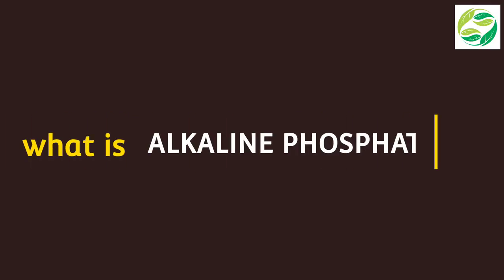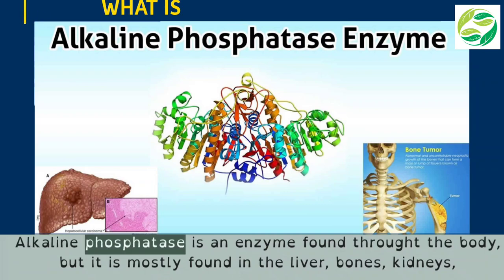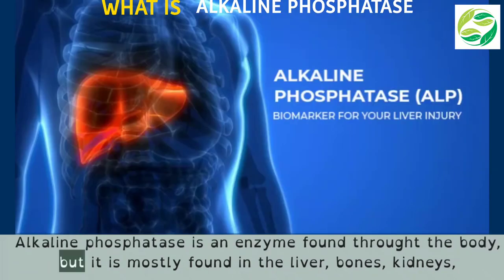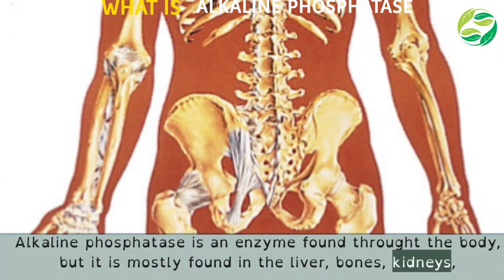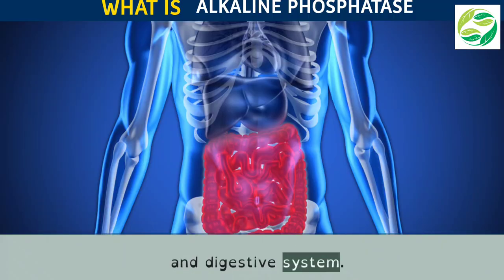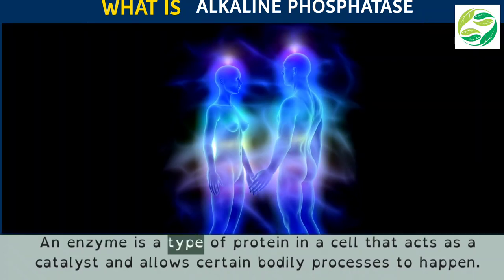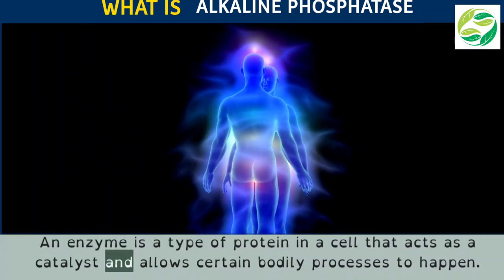What is alkaline phosphatase? Alkaline phosphatase is an enzyme found throughout the body, but it is mostly found in the liver, bones, kidneys, and digestive system. An enzyme is a type of protein in a cell that acts as a catalyst and allows certain bodily processes to happen.